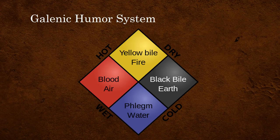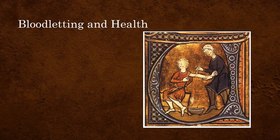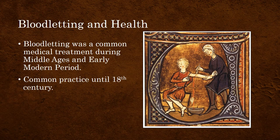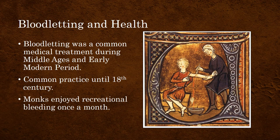An imbalance of the humors resulted in disease. Galen's humoral theory was one of the central principles in Western medicine from antiquity through the 18th century. It is in this context that bloodletting was a common medical treatment during the Middle Ages and early modern period. Bloodletting was considered one of the ways to get the humors back into balance. It was, in fact, a common practice until the 18th century. For example, Christian monks and nuns enjoyed recreational bleeding once a month.